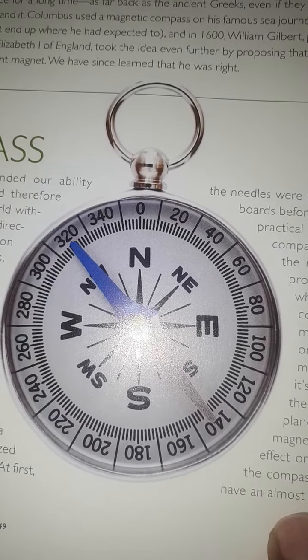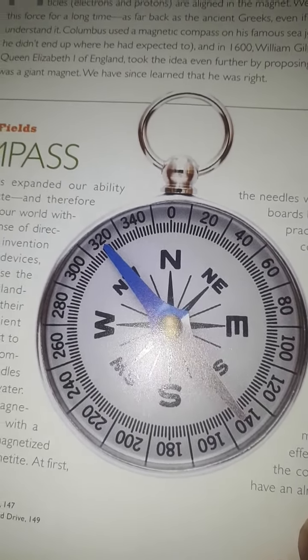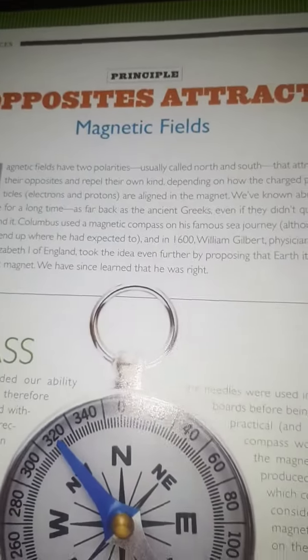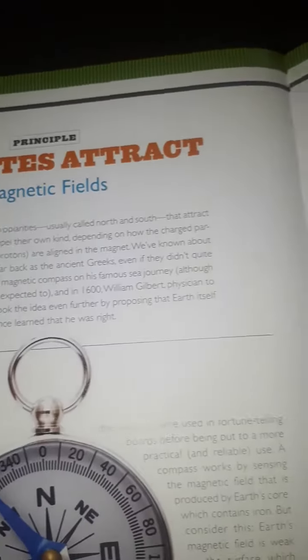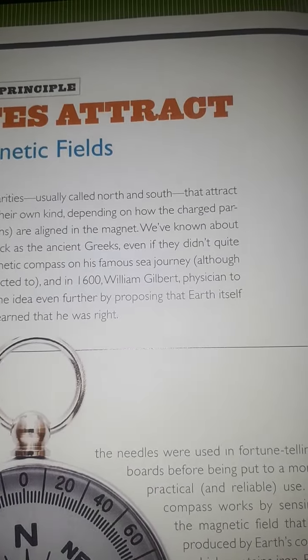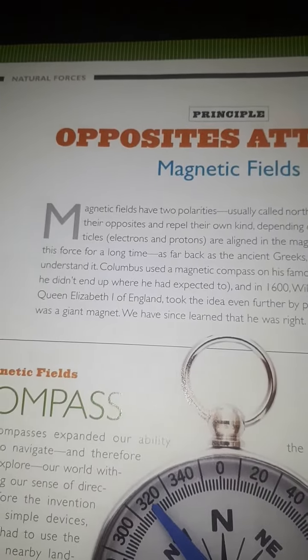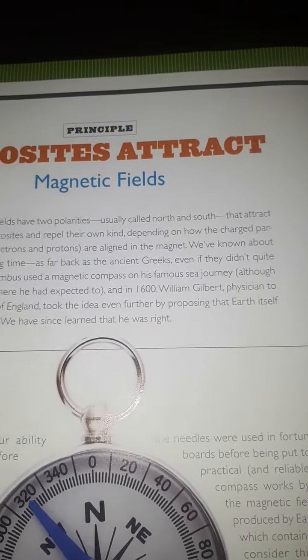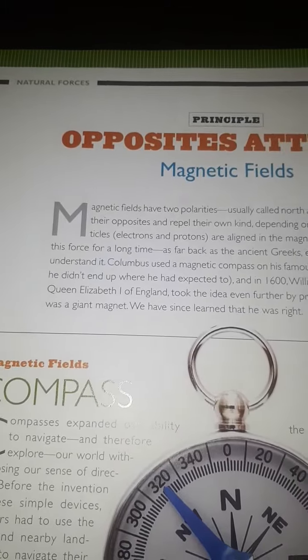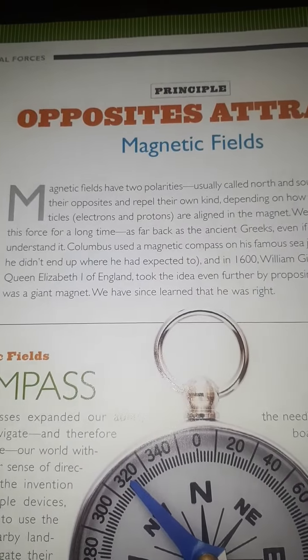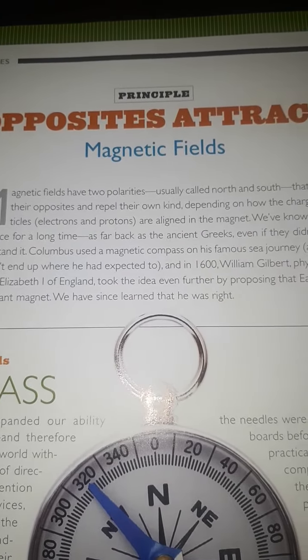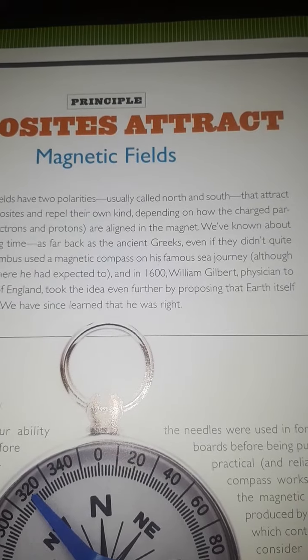A compass magnet automatically aligns to North and South. Even the ancient Greeks knew of this, though they didn't quite understand it. Columbus used a magnetic compass on his famous sea journey, although it didn't end up where he had expected.